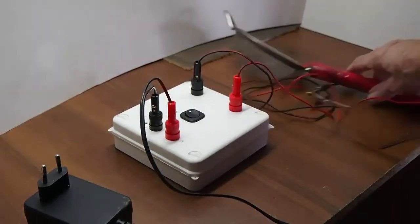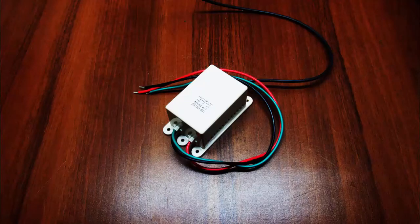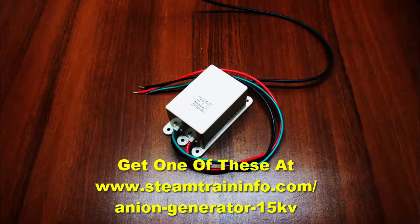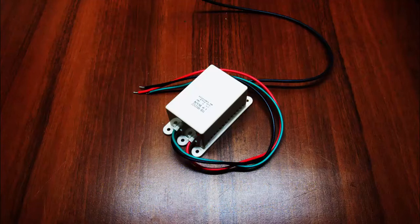We'll take you through the process of making this right now. The heart of a static grass applicator is the ion generator. Don't waste your time with these fly swatters - they are very ineffective. This is a 15 kilovolt DC output. It makes the grass stand up and stand up well.